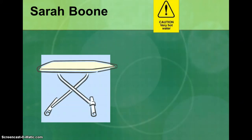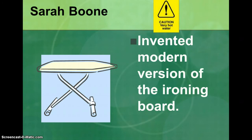Sarah Boone invented the modern version of the ironing board, which made it easier to iron your clothes. So you wouldn't need to always wear a suit — you could just iron your shirt before you get to the meeting.